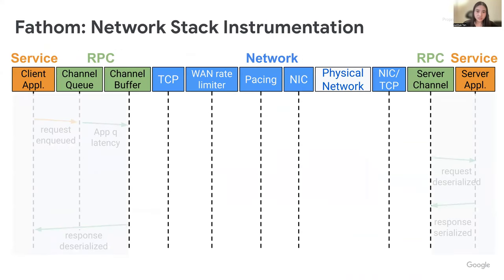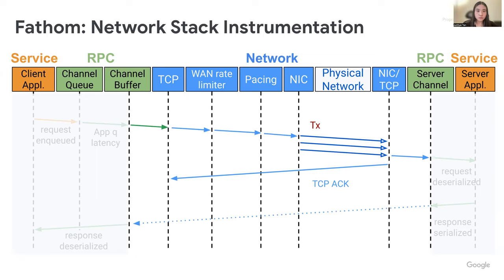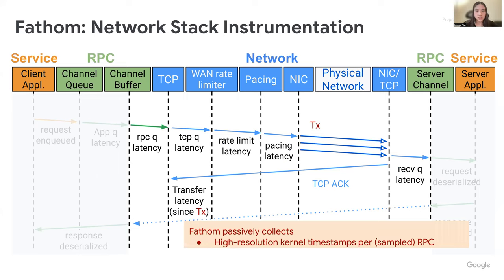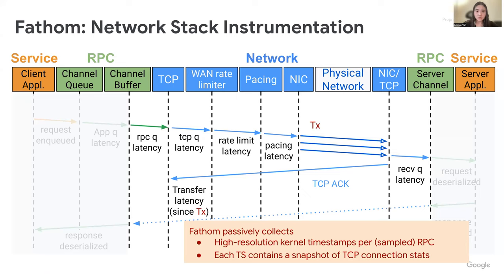So what exactly does Fathom gather? The network stack has multiple layers, each with significant impact on RPC performance. Fathom passively collects high-resolution kernel timestamps across each of those layers for each RPC and calculates the latencies spent at each layer by measuring the time difference. Additionally, alongside each kernel timestamp, Fathom captures a snapshot of TCP connection statistics, including congestion window, delivery rate, recurring timeout, etc. Those statistics can help identify performance issues — for example, they can differentiate between RPCs limited by receiver's window size and those constrained by applications that simply don't have enough data to send.